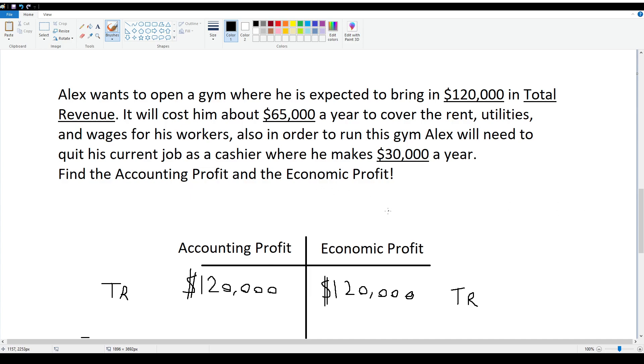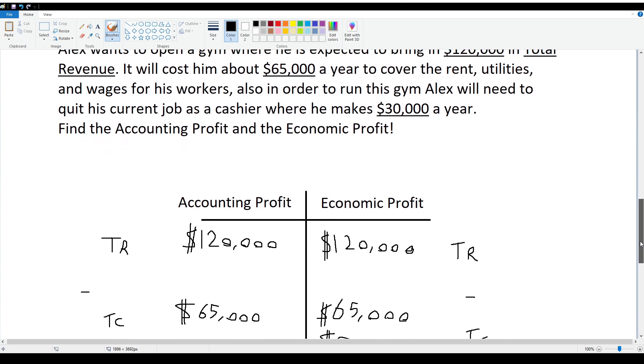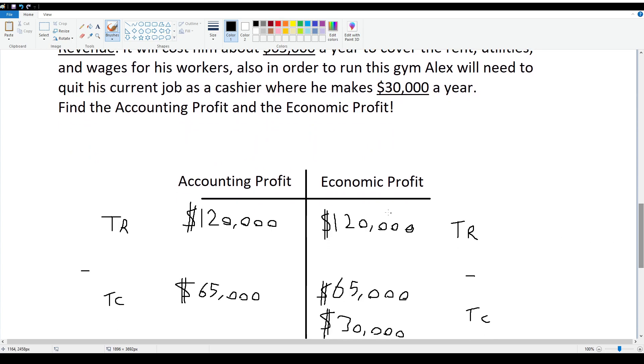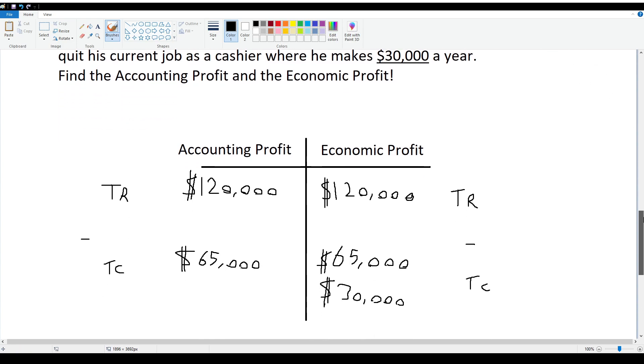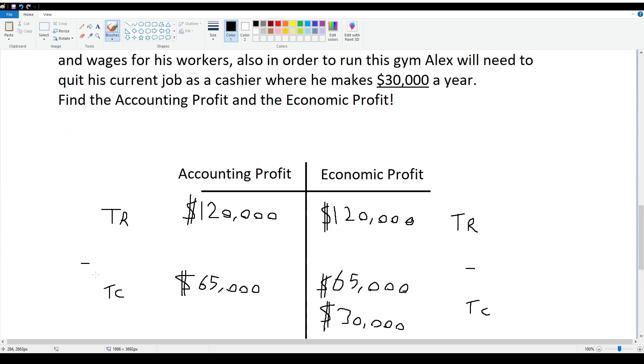Find the accounting profit and economic profit. Well, what stays the same in both of these problems is the total revenue. That would stay as $120,000, which is up here and it also says total revenue.